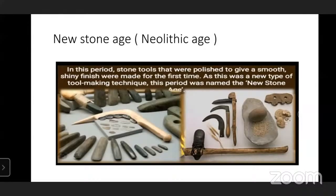In this picture you can see axes and hammers - very polished objects. In this period, stone tools were polished to give a smooth, shiny finishing and were made for the first time. As this was a new type of tool-making technique, this period is called the New Stone Age. By this time, agriculture and domestication of animals and animal husbandry also developed.